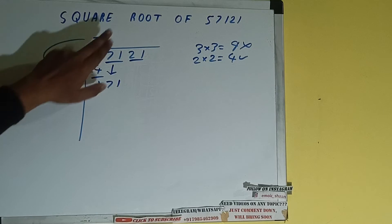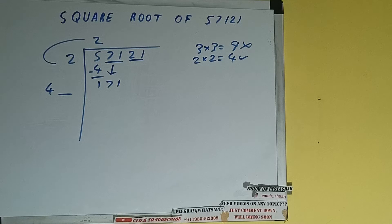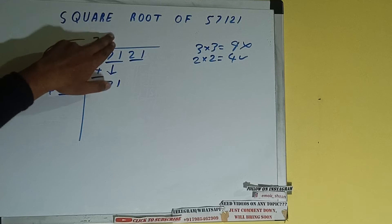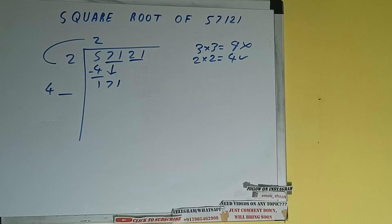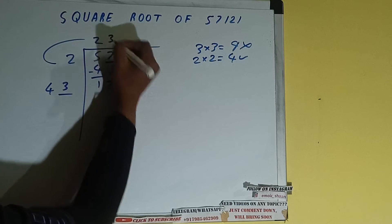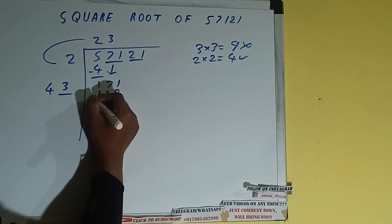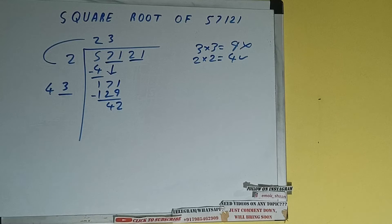Now whatever number we write here we need to write here also. So if we try four here and four here we'll be getting 176 which is bigger than 171, so we cannot use four, we'll be using three. So three here and three here, it will be 129 subtract, 42 will be left.